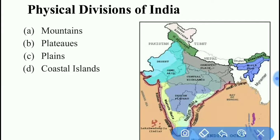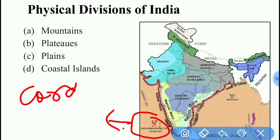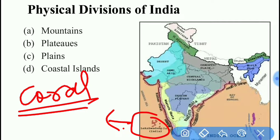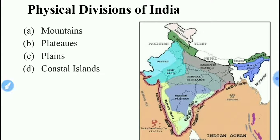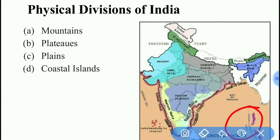Now I will be talking about islands. There are two coastal islands. The first is Lakshadweep Island, which is located in the Arabian Sea and has coral origin — they are basically made of corals. The second island is Andaman and Nicobar Island, which is located in the Bay of Bengal, just south of Myanmar.